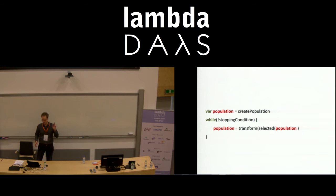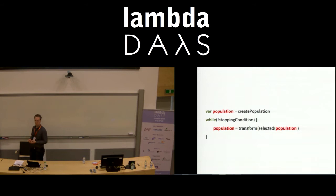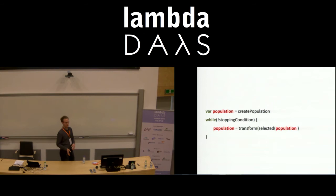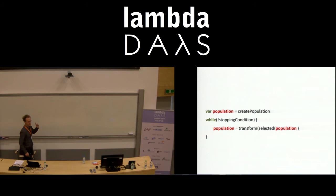Now we can move on to evolutionary algorithms. I suppose most of you probably know the basic form of an evolutionary algorithm. We start with an initial population and we generate the next population by selecting the best individuals — some potential solutions to our problem. We select the best individuals and then transform them using operators like mutation and crossover. We repeat it until some stopping condition is met. Sometimes you can also introduce elitism, which consists in passing the best individuals from one generation to another without changing them. But overall, you always end up with discrete generations — it's basically a single loop for the whole population.